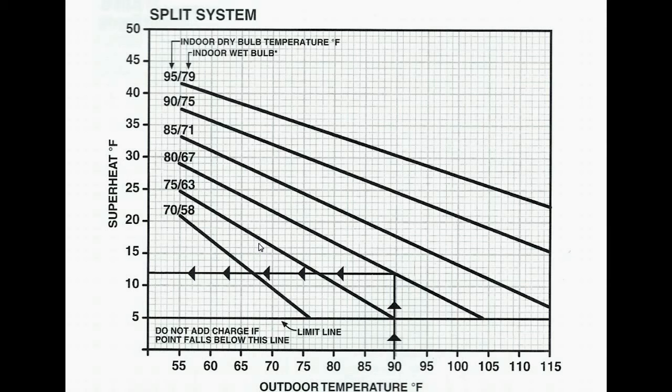And the way that you use this diagram, we'll use this example that we have here, is you want to get another thermometer or temperature probe out and measure the outdoor air temperature. Make sure that you're not measuring radiant heat or reflected heat off the side of the home. So put your temperature probe somewhere in the shade and measure the air entering the condenser.